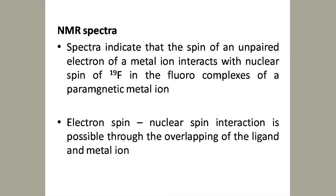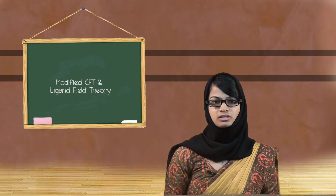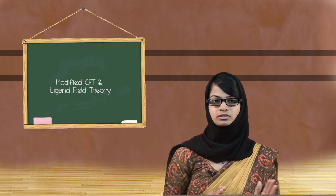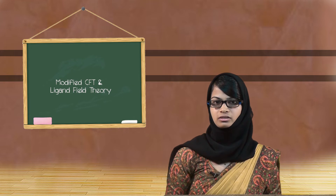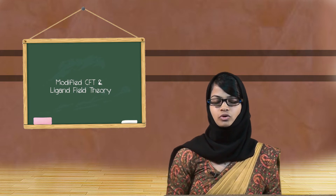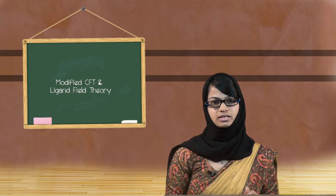The third evidence is from NMR or nuclear magnetic resonance spectral studies, applied to halo complexes — for example, ¹⁹F or fluoro complexes of the metal. In this case, there is an interaction between the electron spin and the nuclear spin; the electron of the metal interacts with the nuclear spin of ¹⁹F. This interaction gives rise to overlapping between the fluoro ligand and the metal, and in the fluoro complexes of the metal, this overlapping gives rise to some extent of covalent bonding.